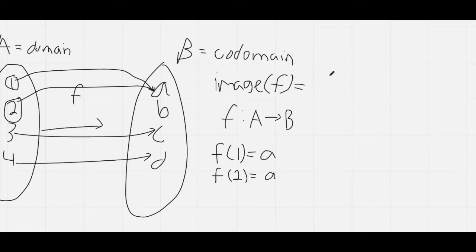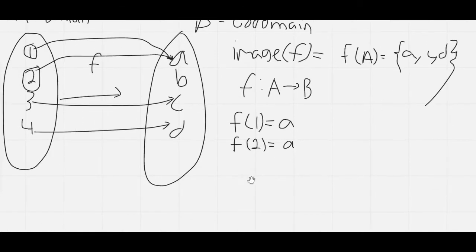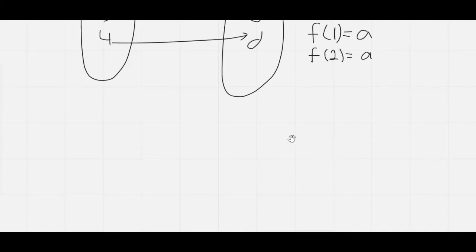So the image of F, what will often be times written as F of the set A, is the set of objects that A gets mapped onto. So in our case, this is A, C, and D. So that is basically what a function is.